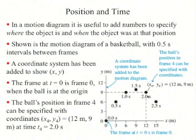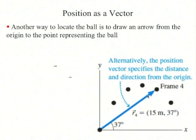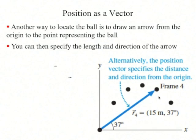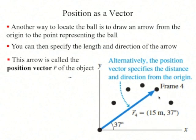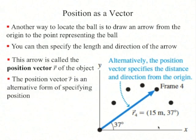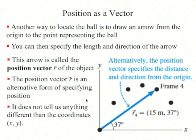y₄ equals 9 meters, and t₄ is 2 seconds. Another way to locate the ball is to draw an arrow from the origin to the point representing the ball, specifying the length and direction of that arrow. This is called the position vector r of the object. Two numbers are required to specify r: the length, 15 meters in this case, and the angle measured counterclockwise from the x-axis, 37 degrees in this case. The position vector is an alternative form of specifying position — it tells us the same thing as the coordinates x and y.